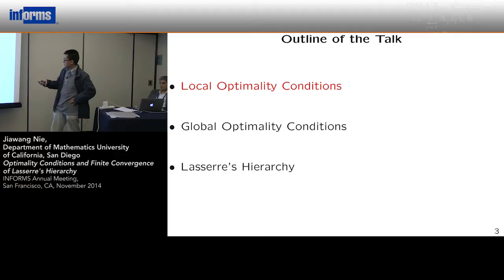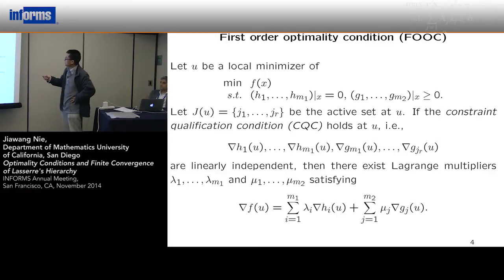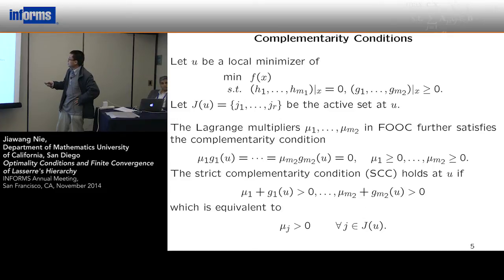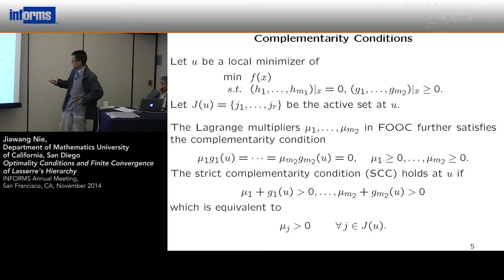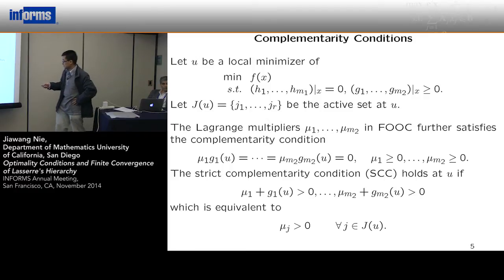The talk has three parts: the first is a review of the classical local optimality conditions, the second is about the global optimality conditions, and the third is the consequence of the previous two. So, for the first order optimality condition, if the constraint qualification holds at a minimizer — meaning the gradients are linearly independent — then the first order condition holds. There is also a complementarity condition for inequalities: the Lagrange multipliers and the product are always equal to zero, and the signs are non-negative. If the sum is strictly positive, that is called strict complementarity.